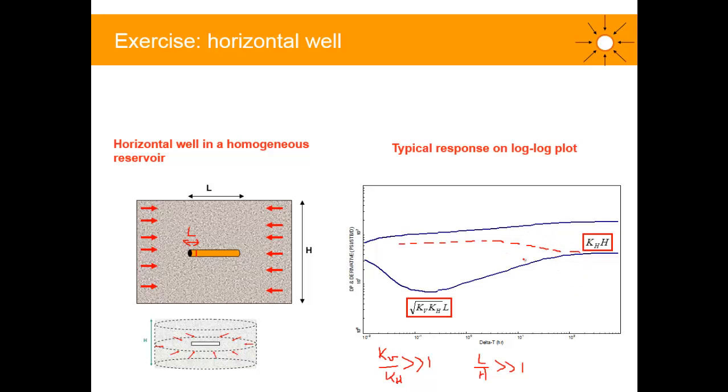This decline means that we've got 3D flow, three dimensional flow towards the well. And if we've got a very small section of the well producing, then intuitively you can imagine this 3D flow or spherical flow in the reservoir towards this very small section.